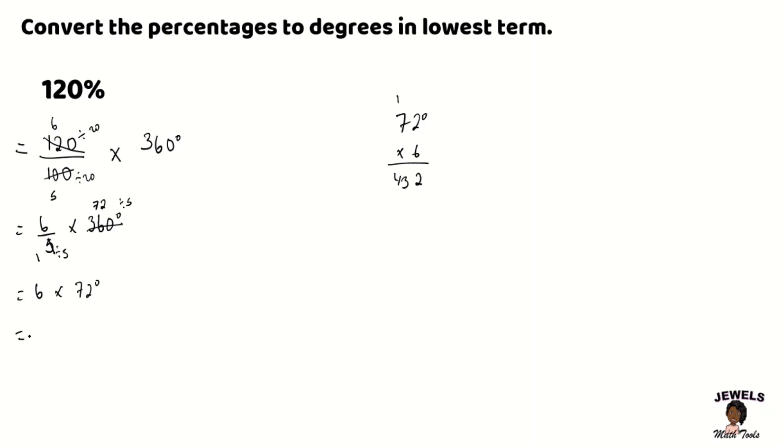So our percentage 120 percent as degrees will equal to 432 degrees and in looking at my percentage which is 120 percent knowing that 120 is larger than 100 percent that means naturally the degrees that we get when we convert this percentage into degrees should also be larger than 360 degrees.